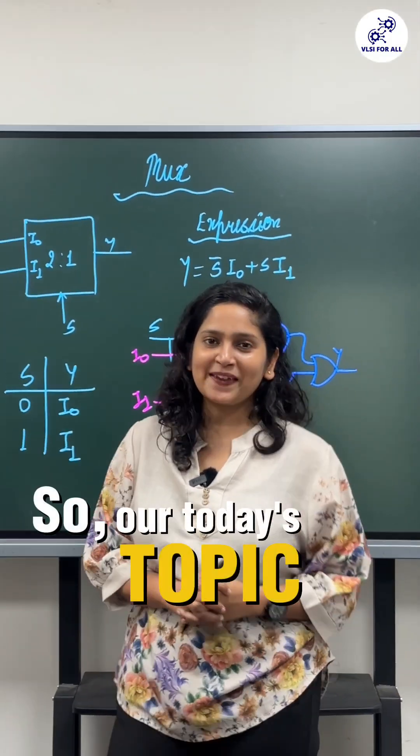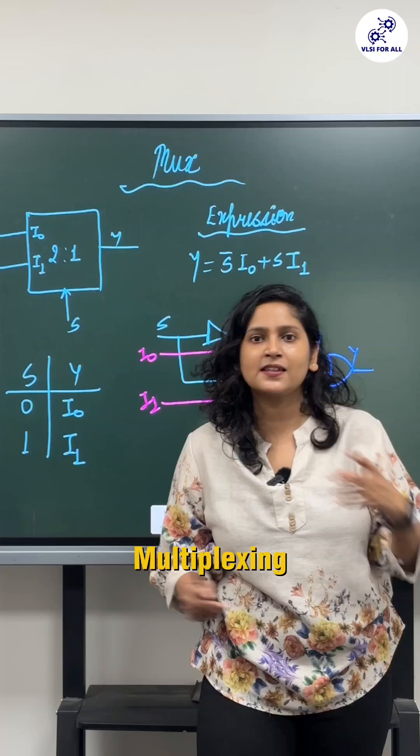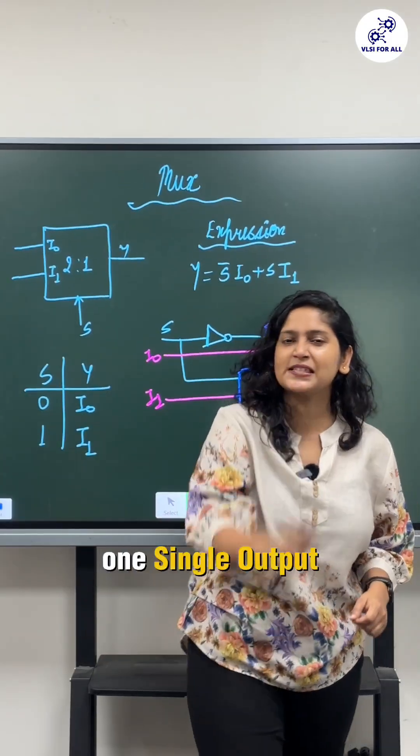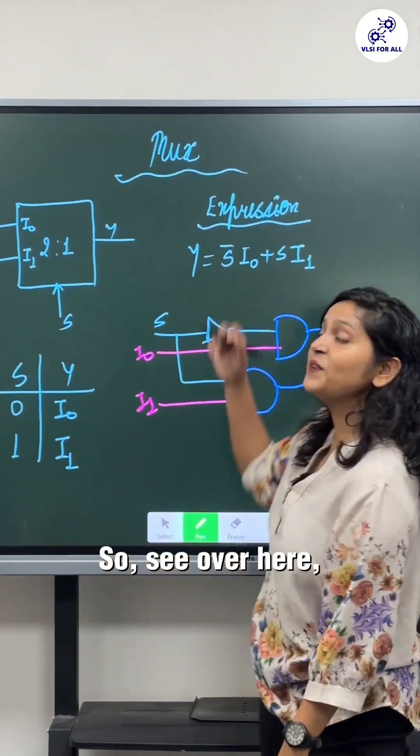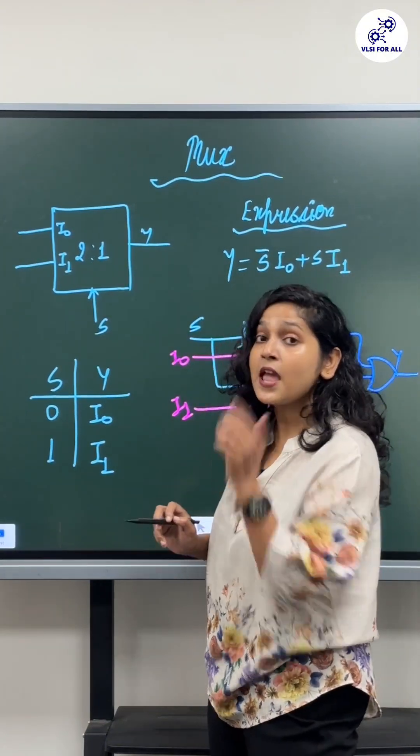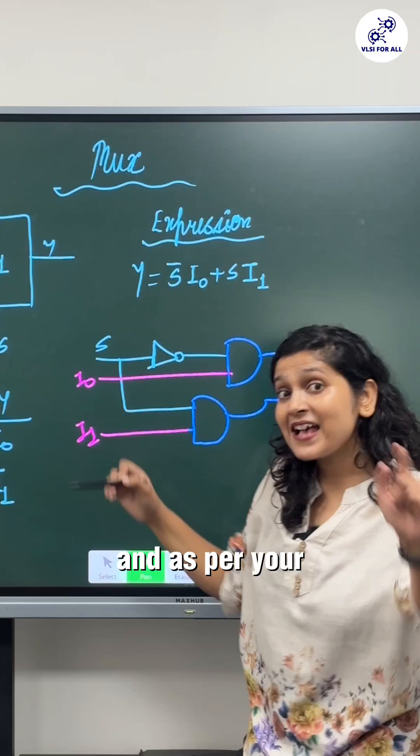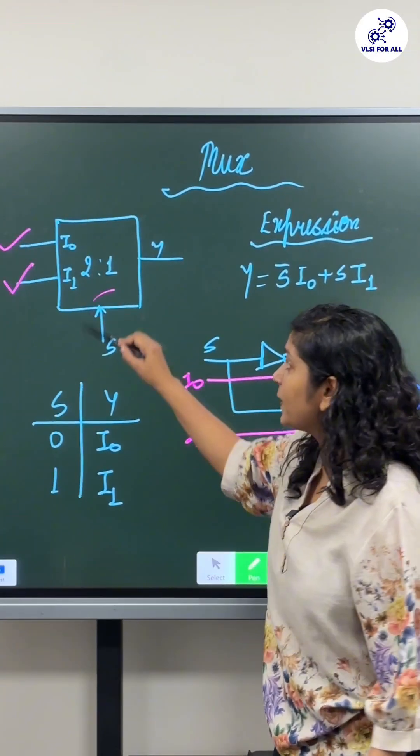Hello everyone, so today's topic is multiplexers. As its name suggests, multiplexing means a lot of signals are coming and you are getting a single output. So over here we have taken a very basic example, that is a 2:1 multiplexer. Here what is happening is two inputs are coming and as per your selection lines, you will get any of the input in the output.